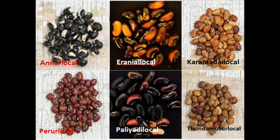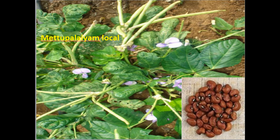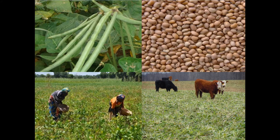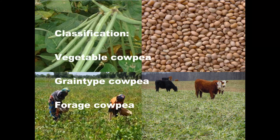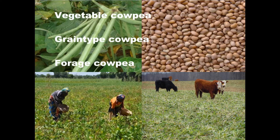Local varieties include Annoor Local, Iranian Local, Karamadi Local, Peru Local, Paliyadi Local, Tundamutur Local, Metapalayam Local, and Panavila Local. Cowpea is classified into three types: Vegetable Cowpea, Green Type Cowpea, and Forage Cowpea.